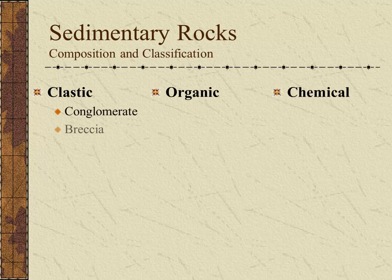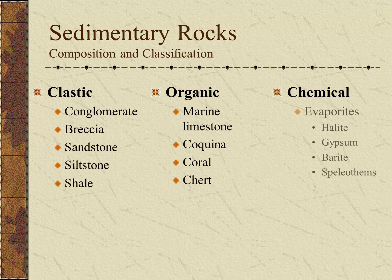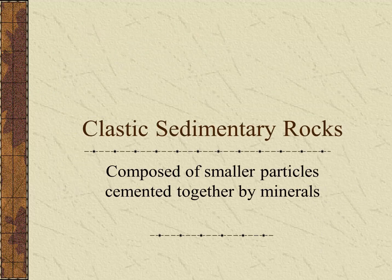The clastic are made of finer particles, the organic from formerly living things, and the chemical are deposited through chemical processes. So let's dive in.